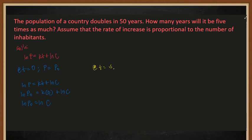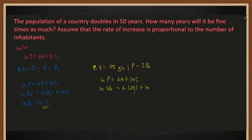At T equals 50 years, it is said that the population will be doubled from the initial. So our initial is P sub zero; therefore it doubles to 2P sub zero. Using our equation, ln(P) equals ln(2P₀) equals K times 50 plus ln(C). We have T as 50 years, but we don't know K yet.